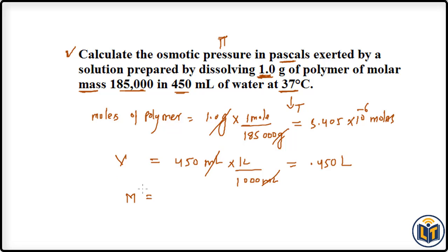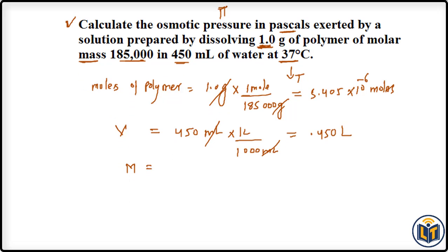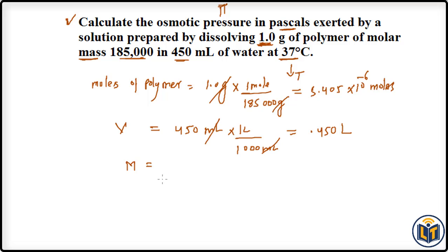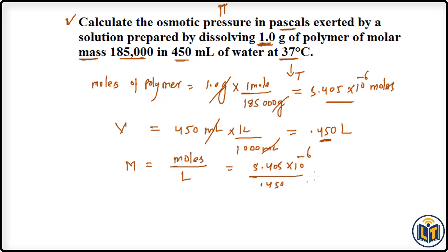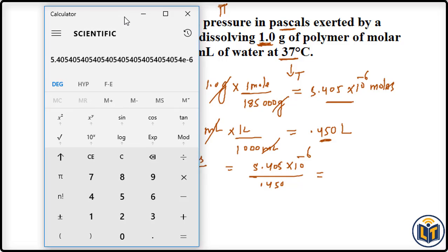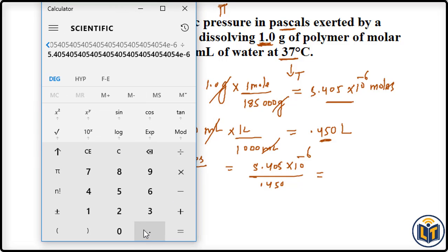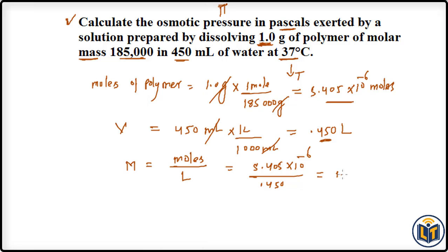We calculate molarity because the osmotic pressure formula requires molarity as a component — it represents the concentration of solution. Molarity = moles of solute / volume of solution in liters = (5.405 × 10⁻⁶) / 0.450. Dividing these values gives us 1.201 × 10⁻⁵ moles per liter.